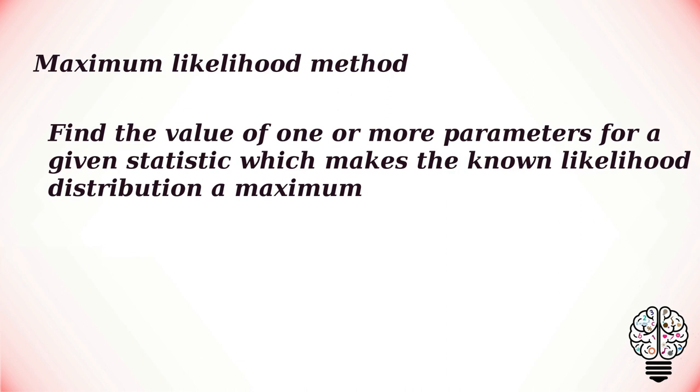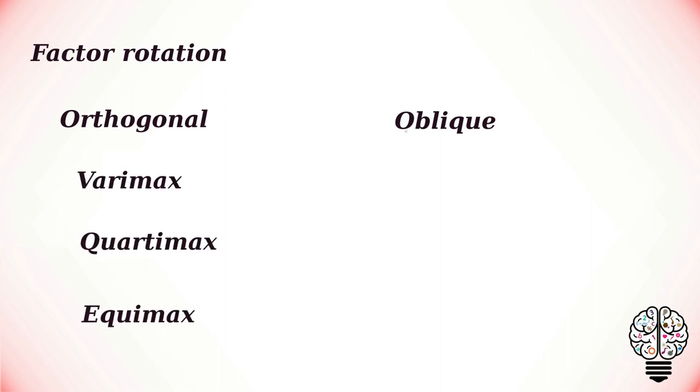Factor rotation is a procedure used for the purpose of simplifying the interpretation of the obtained factors and also to increase the number of high and low positive loadings. There are two basic types and they are orthogonal rotation and oblique rotation. Factors remain independent in orthogonal rotation and factors are allowed to correlate in oblique rotation.